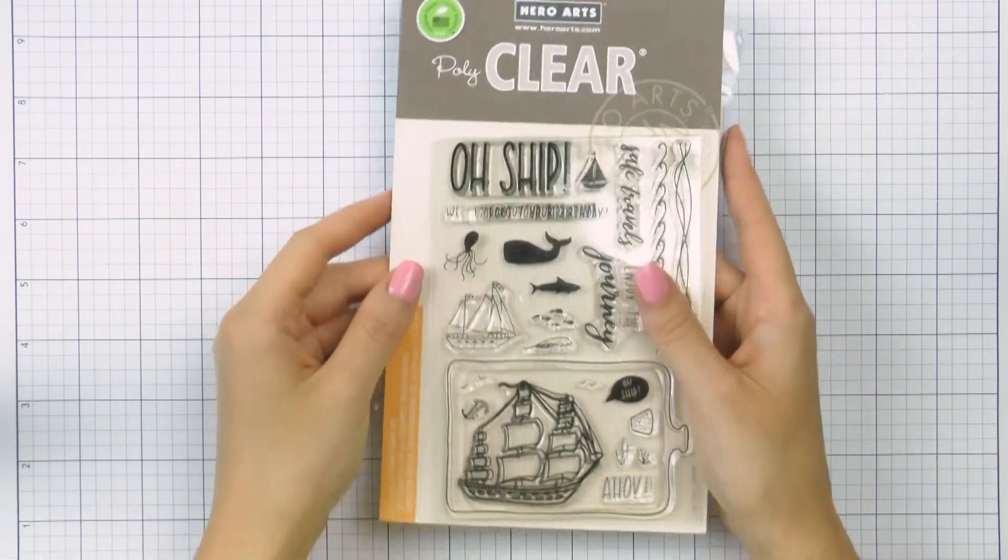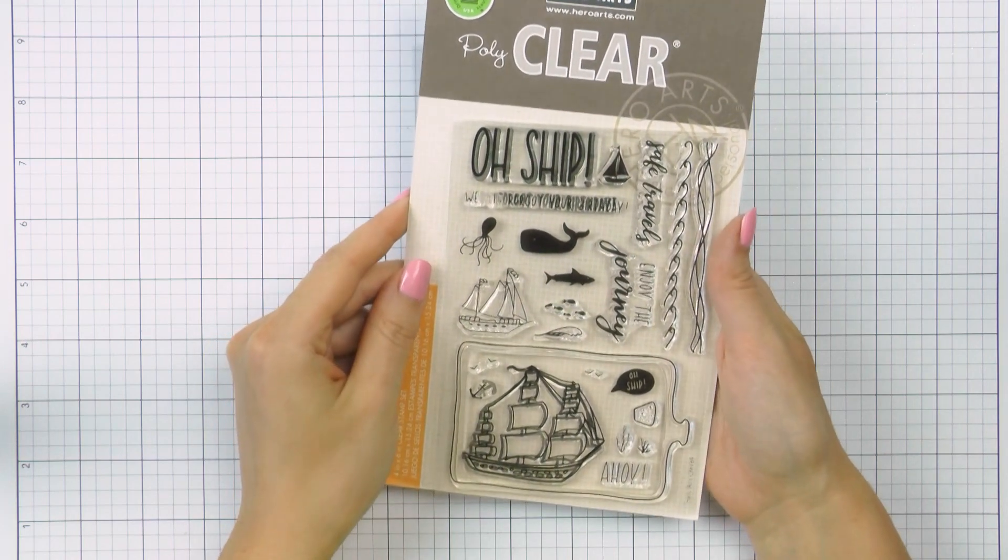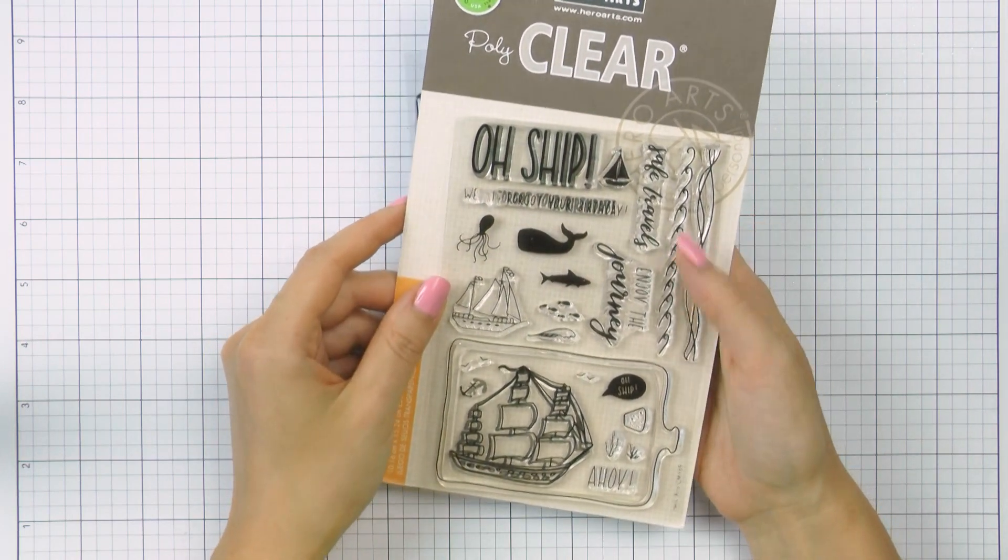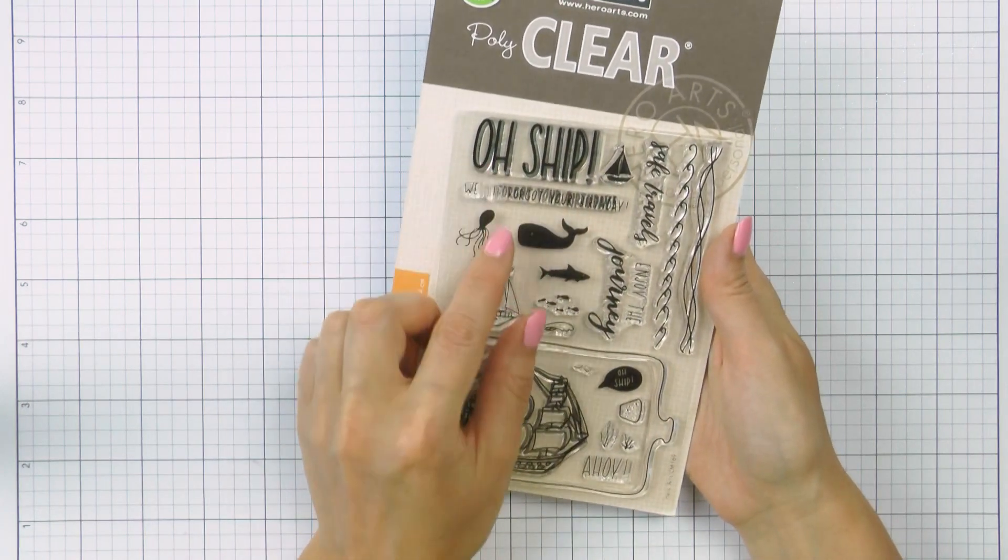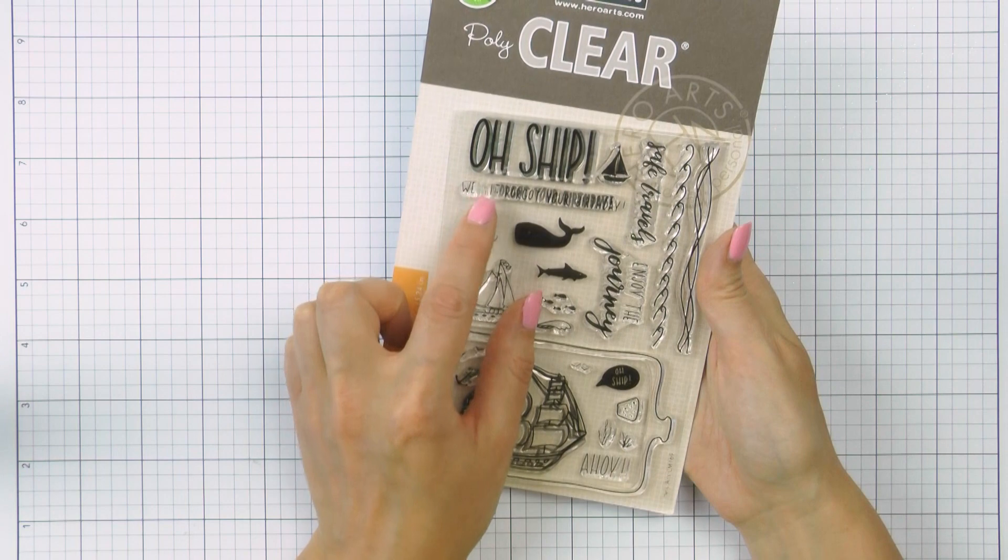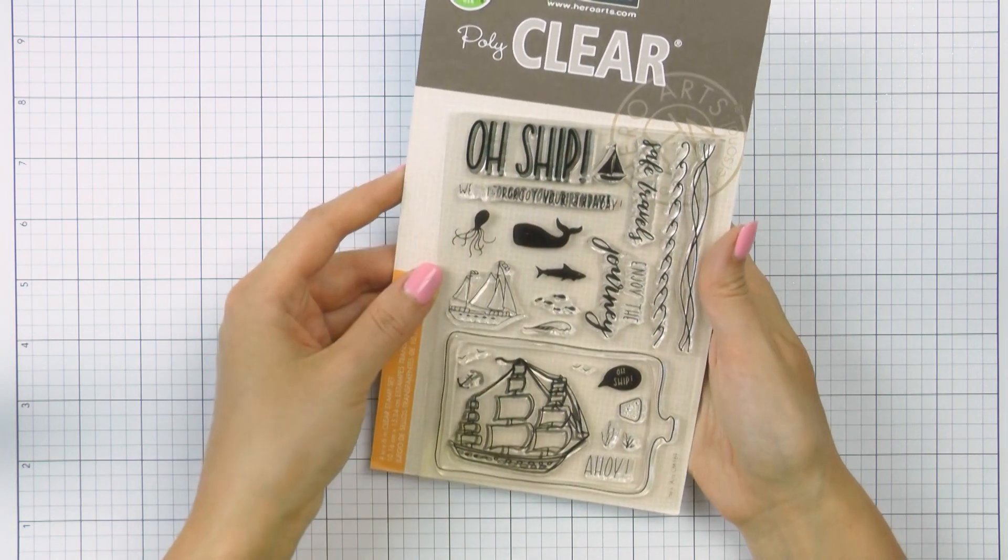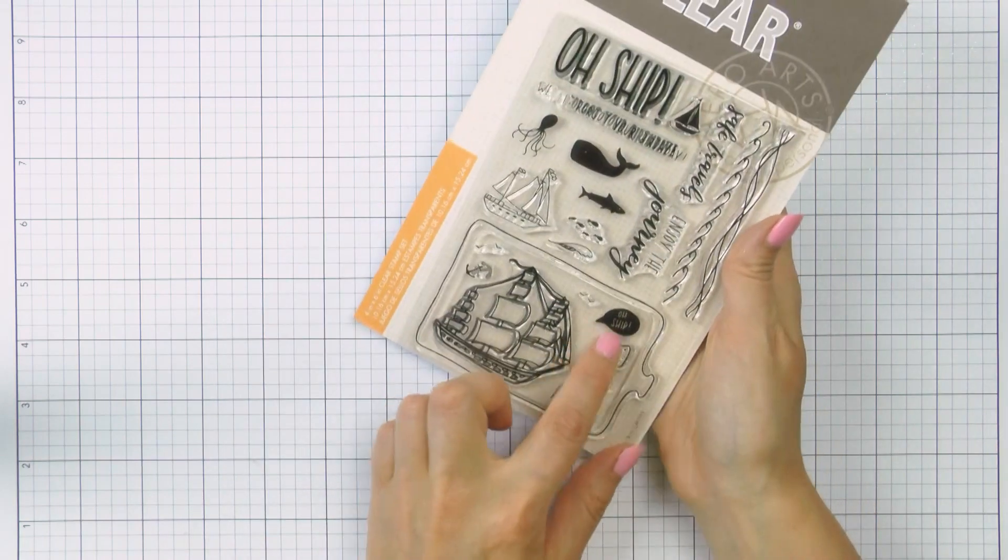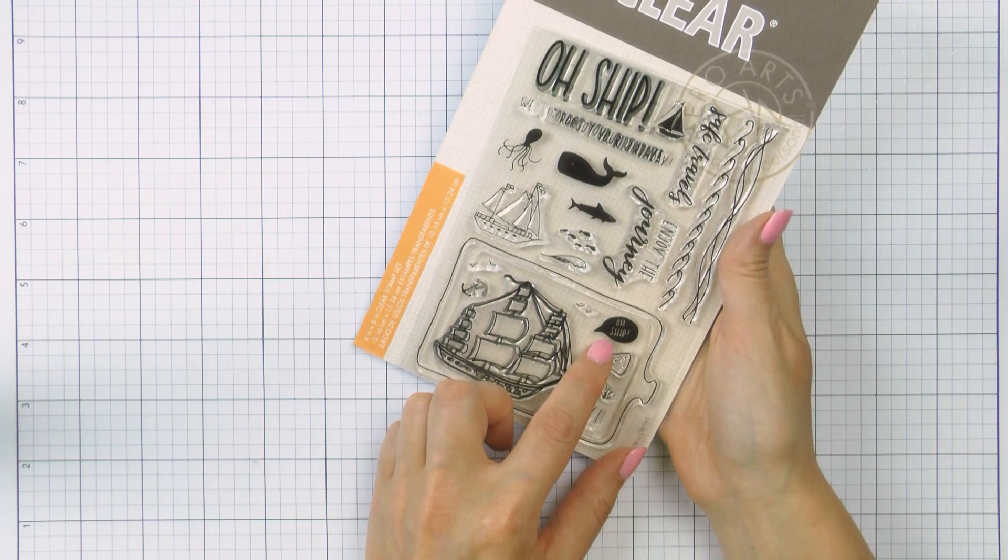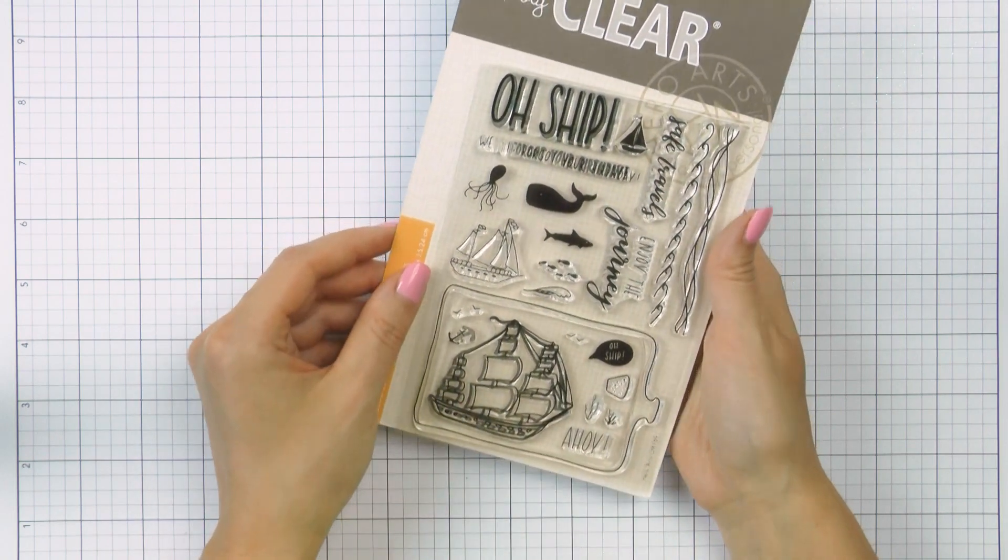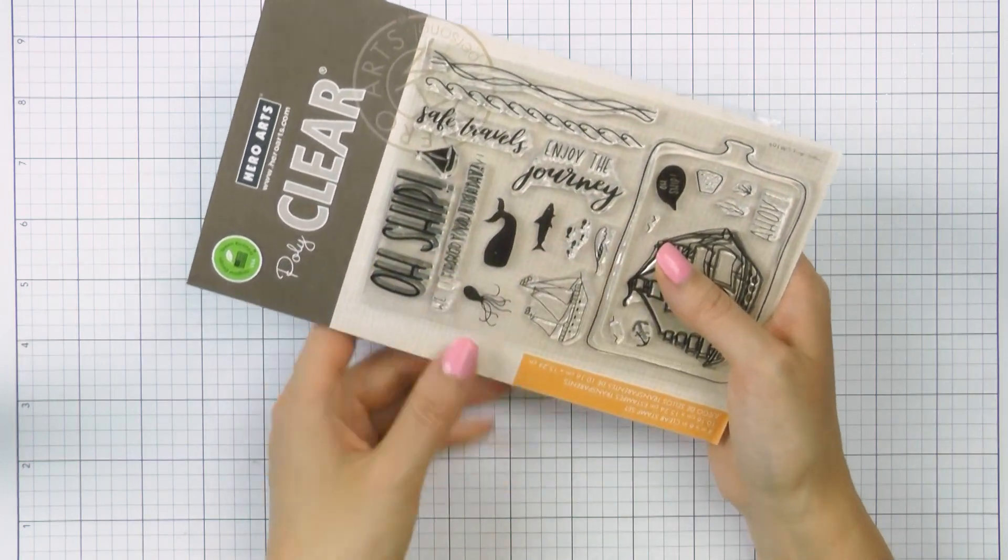I'm going to be using the Enjoy the Journey stamp set from Hero Arts for my focal image and the sentiment. What I loved about this set the most is that there's an option to say either I forgot your birthday or we forgot your birthday. You don't really see that in a lot of sets so I have found that to be rather clever and valuable. The Oh Ship sentiment is also available in the form of a smaller speech bubble if you'd rather the sentiment wasn't so big. There are also other sentiments like Safe Travels and Enjoy the Journey in this set.